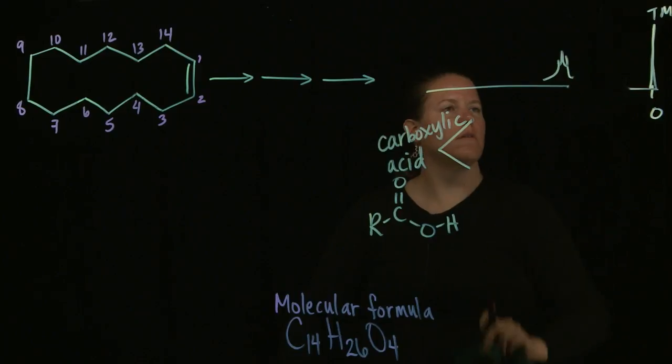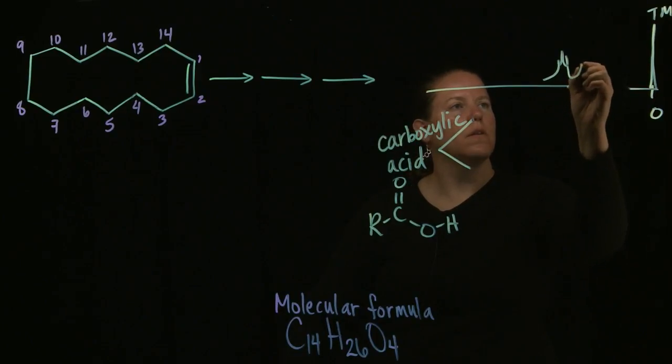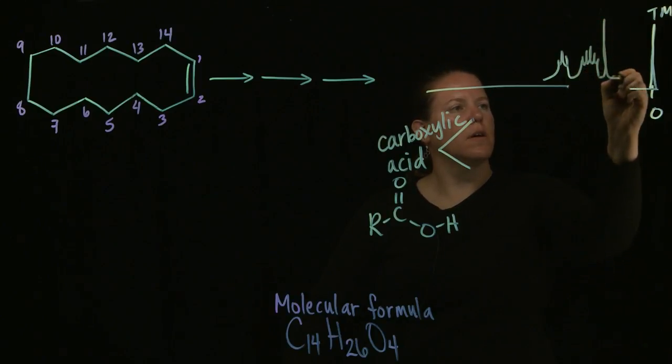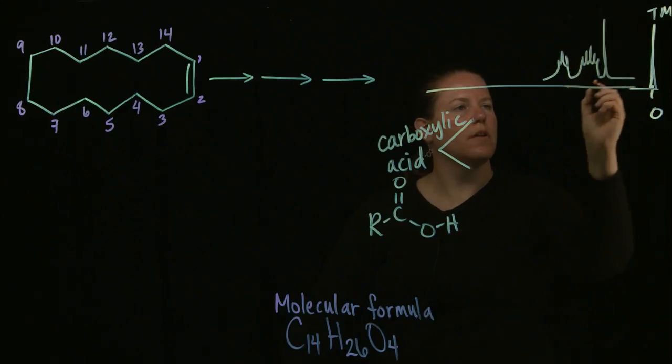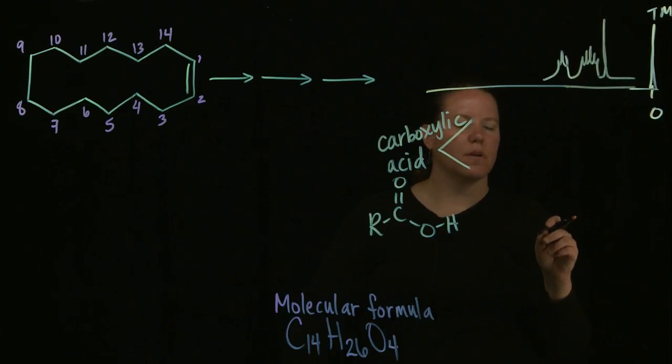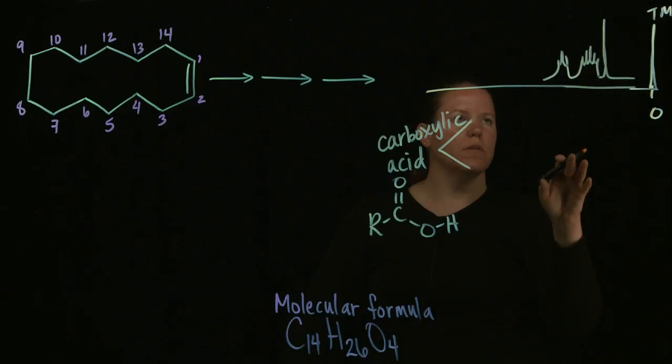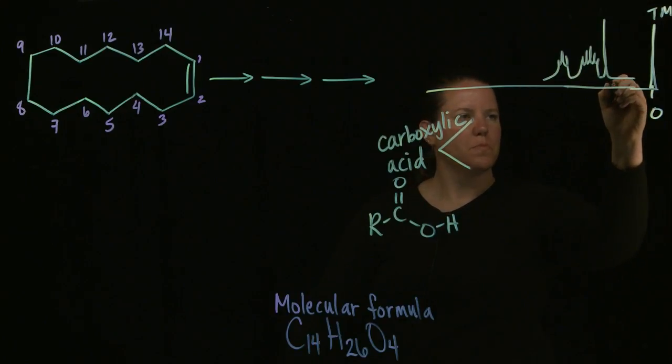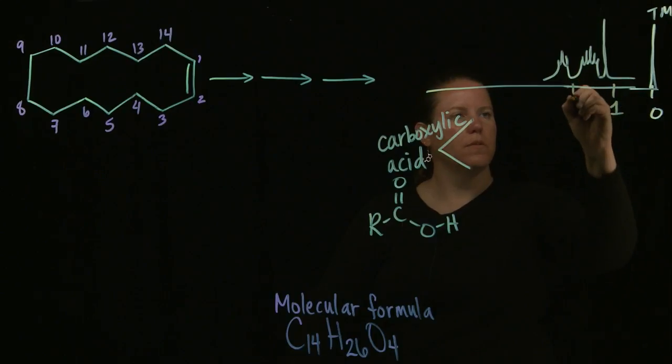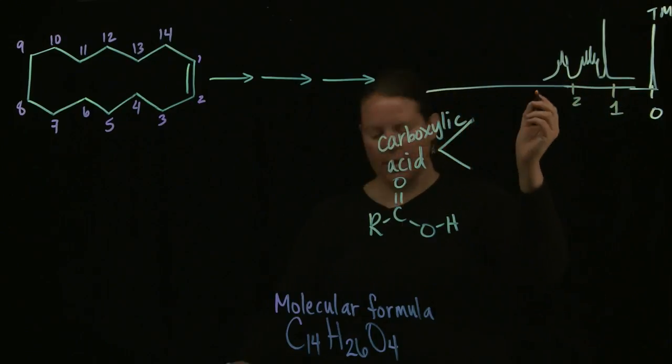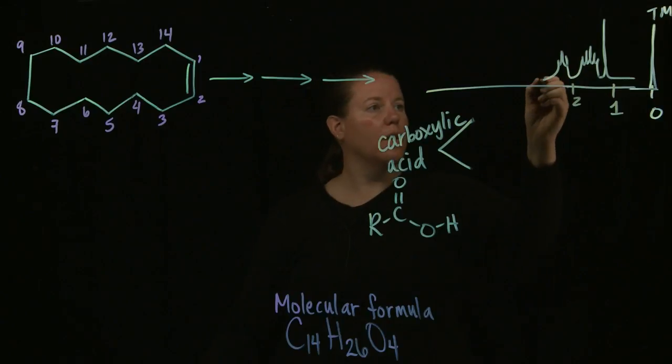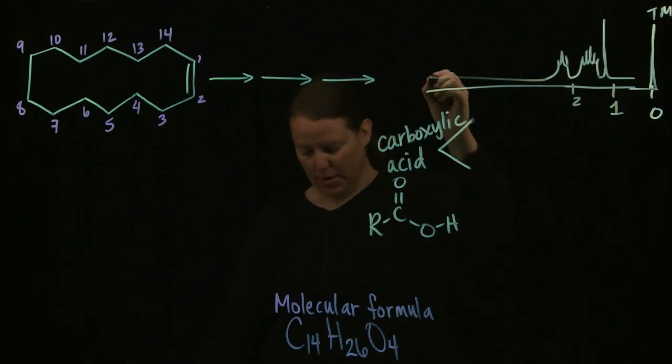This one is either a hex-tet or a sept-tet. It has five peaks or six peaks. I'm not quite sure. Here's one. Here's two. This is a little bit further down. And then way, way, way, way downfield. Like, all the way down here. We have a single peak. And it's like around 11.